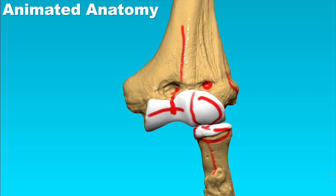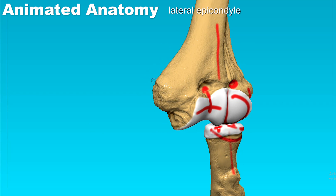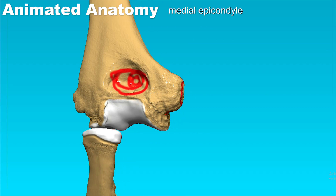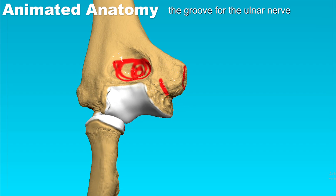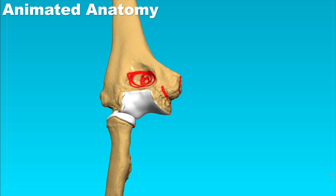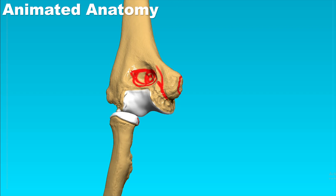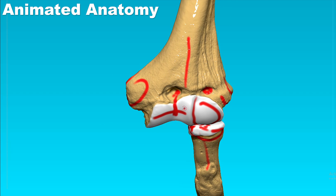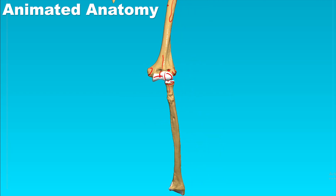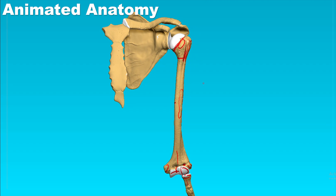This here is the lateral epicondyle, and this here is the medial epicondyle. The medial epicondyle has the groove for the ulnar nerve. Everyone has experienced striking it when the elbow is flexed — it creates a shock-like sensation in the pinky finger and fourth finger. That is what's causing it: you strike the ulnar nerve in that place. And now we are finished with the overview of these three bones.